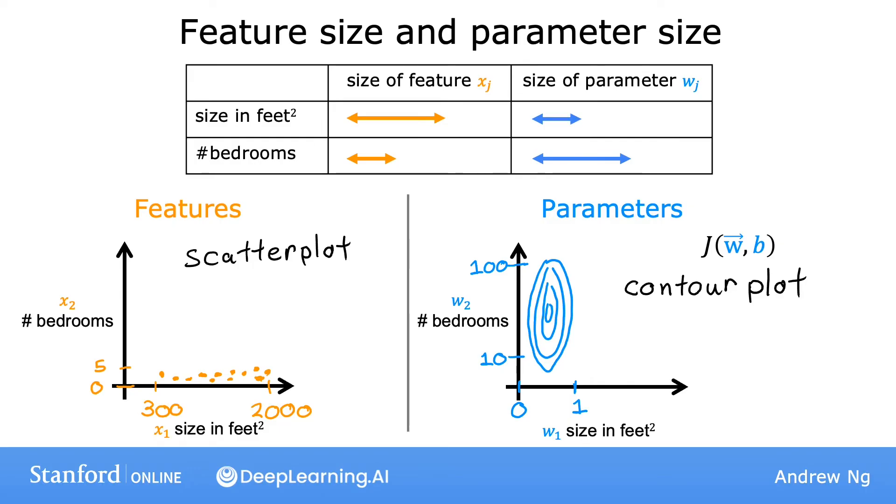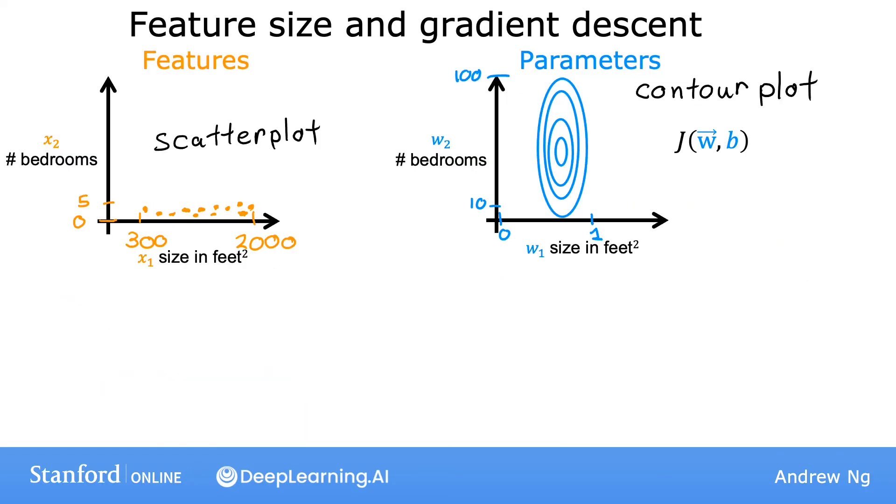So where does this leave us? This is what might end up happening if you were to run gradient descent using your training data as is. Because the contours are so tall and skinny, gradient descent may end up bouncing back and forth for a long time before it can finally find its way to the global minimum.